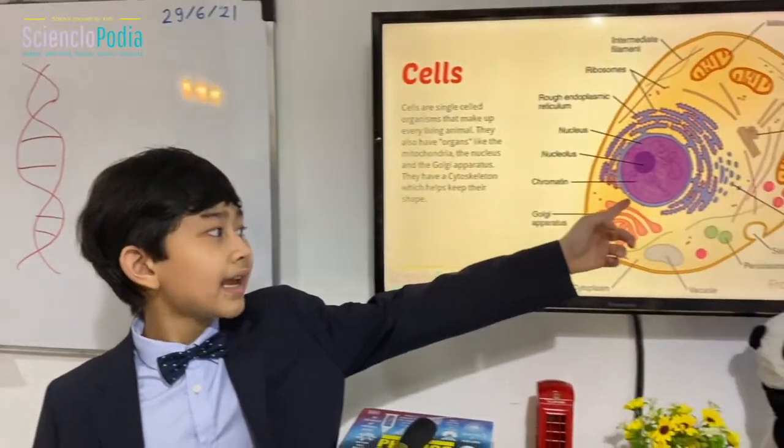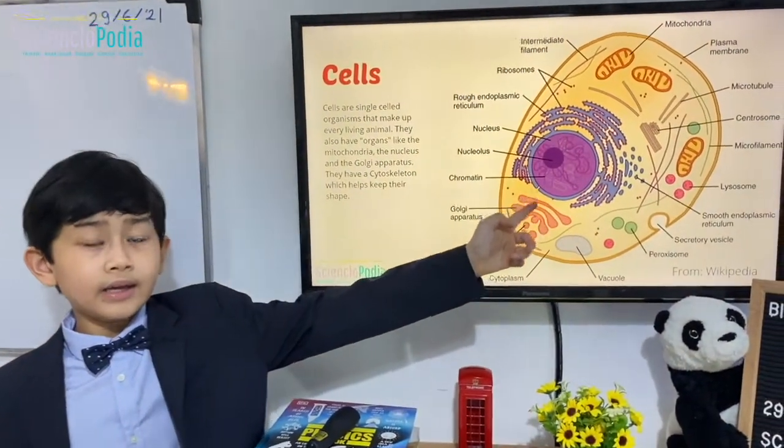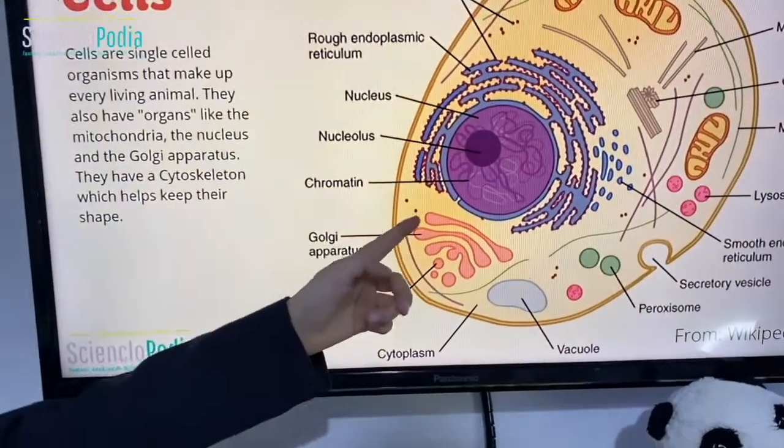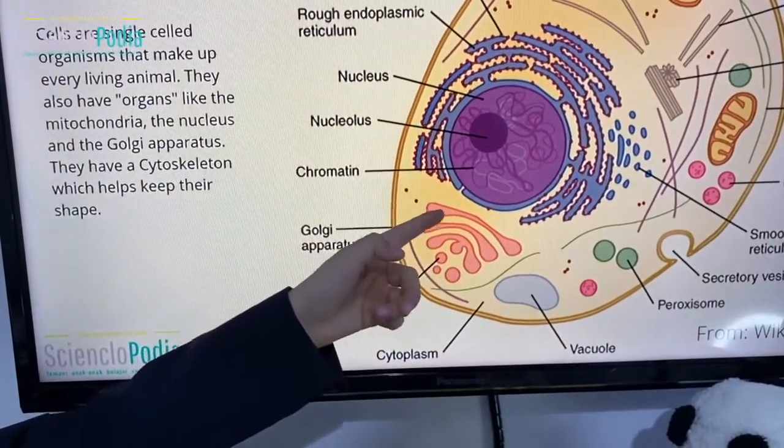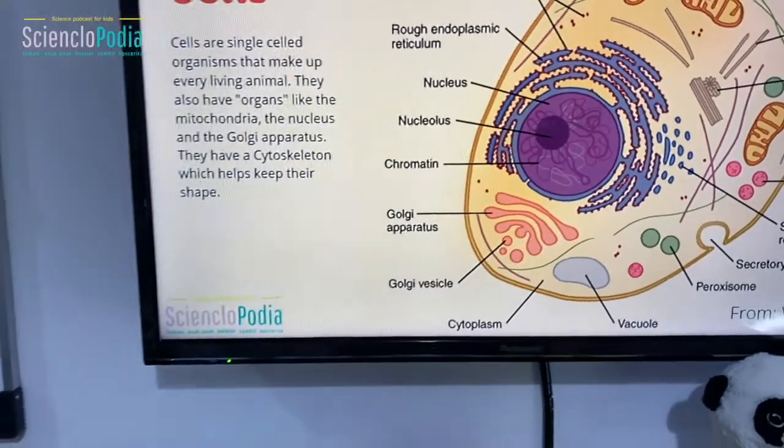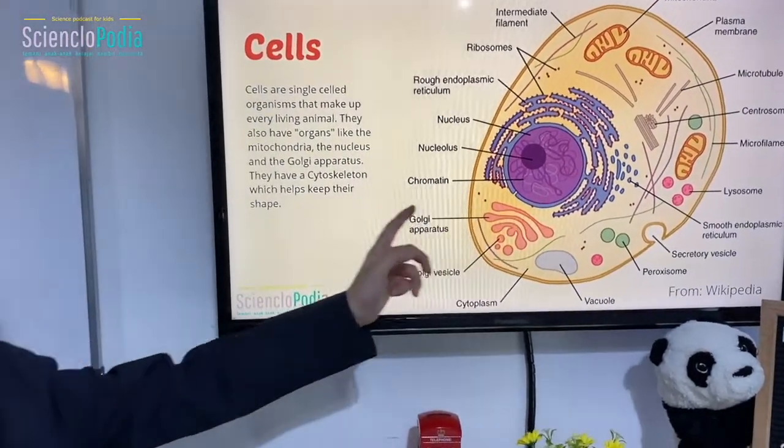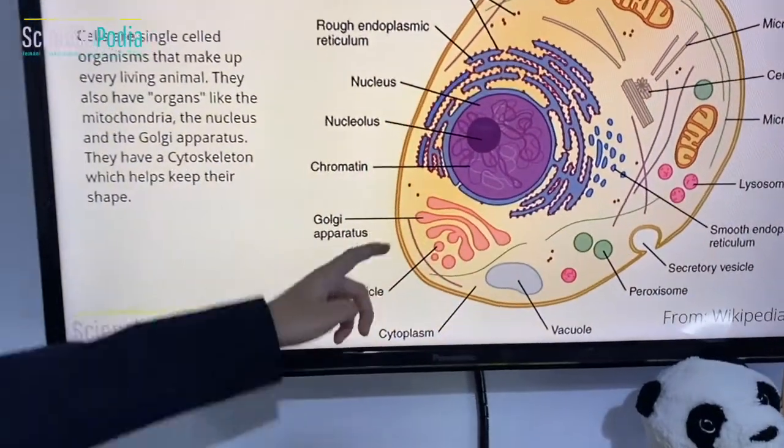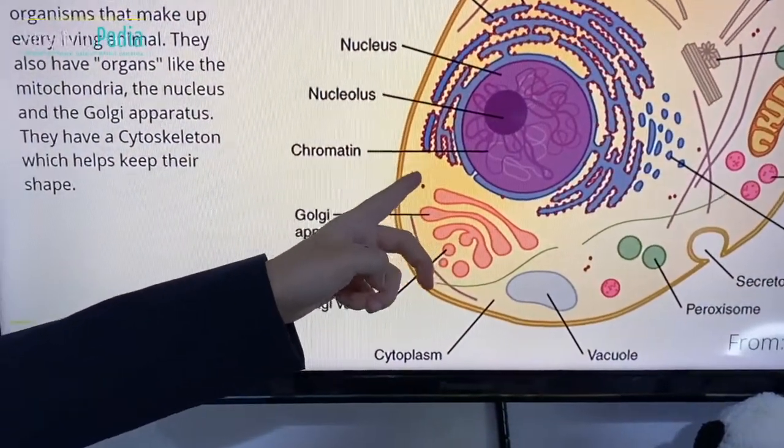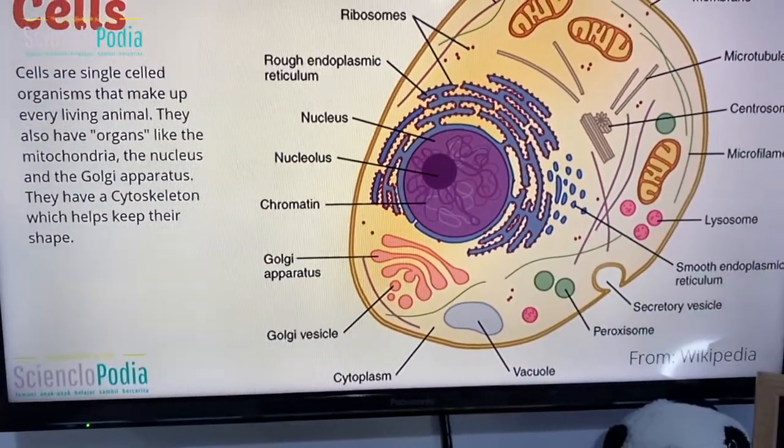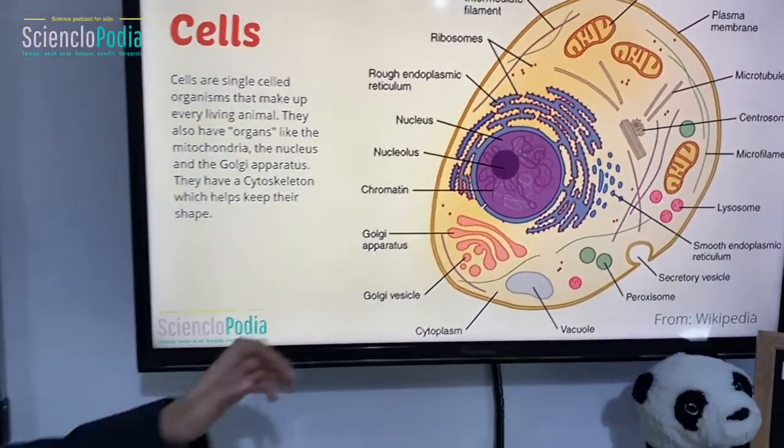If you look more on that picture, you can see a tiny opening right there. That tiny opening is called a nuclear pore, and that nuclear pore is very important because it allows ribosomes to work. Ribosomes are those tiny red things up close, and the ribosomes are very essential with the nuclear pores.